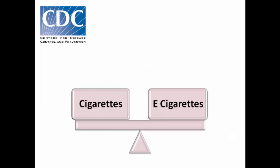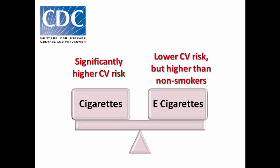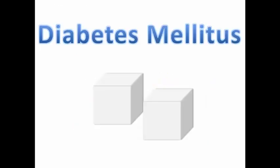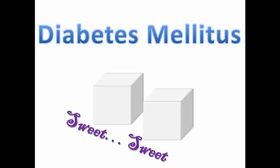In comparison, cigarettes have a significantly higher cardiovascular risk because we are not speaking only about nicotine — we are speaking about many toxins that are burned in cigarettes. E-cigarettes have a relatively lower cardiovascular risk than cigarettes, but still higher than non-smokers. Let's move to the next famous risk factor: diabetes mellitus, a major health problem.